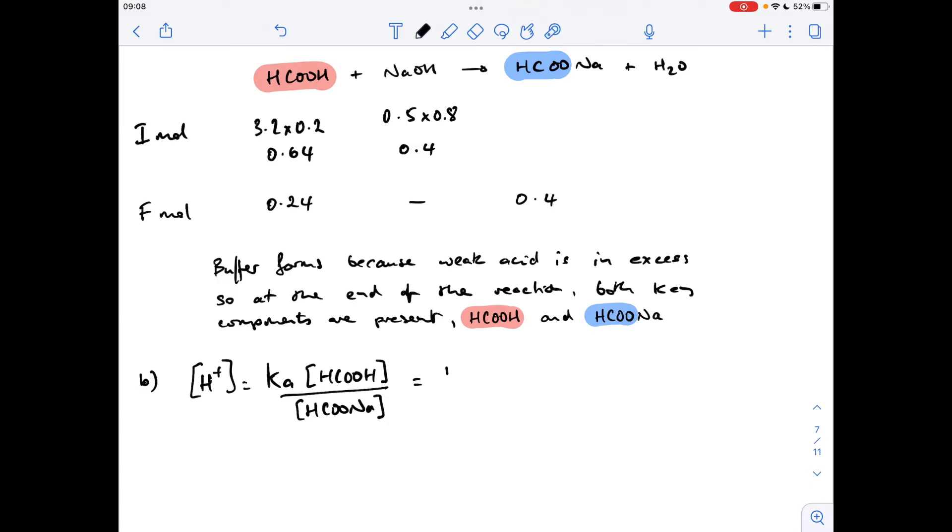So the Ka was 1.7 times 10 to the minus 4. So the acid concentration will be the moles left divided by the volume they're in. So it's a nice easy volume, this 1 decimetre cubed. But I'm going to put the full calculation in just to make the point that concentration is moles divided by volume. And we're dividing that by the concentration of the salt, 0.4 divided by 1.